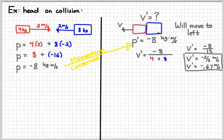And so the total mass of this system is 12. Four plus eight is 12 kilograms. And so dividing negative eight by 12 gives me something like negative two-thirds meters per second. So these two objects are stuck together, moving slowly to the left.